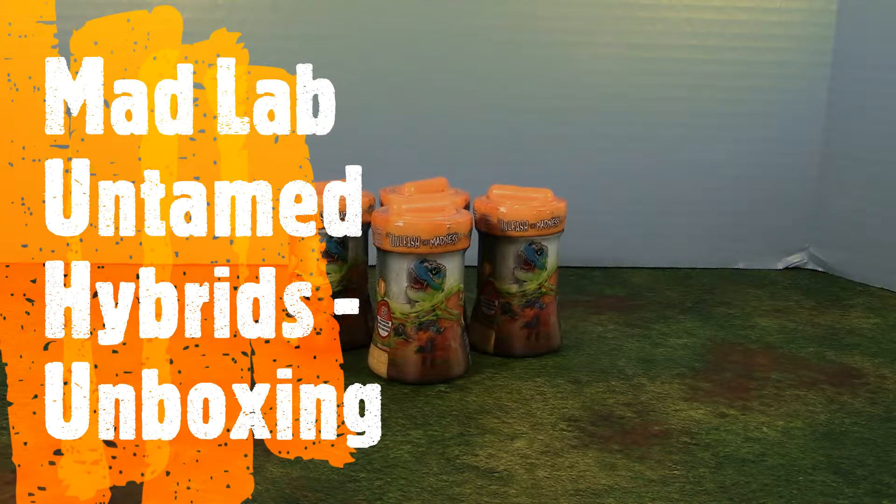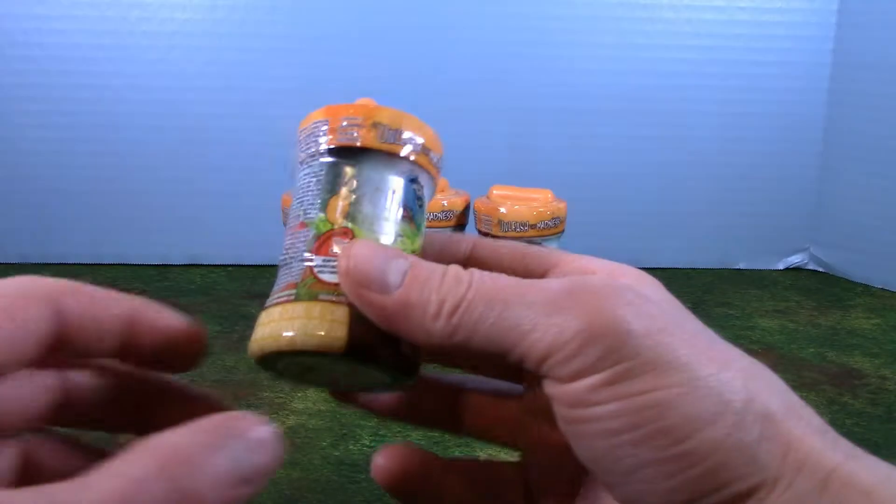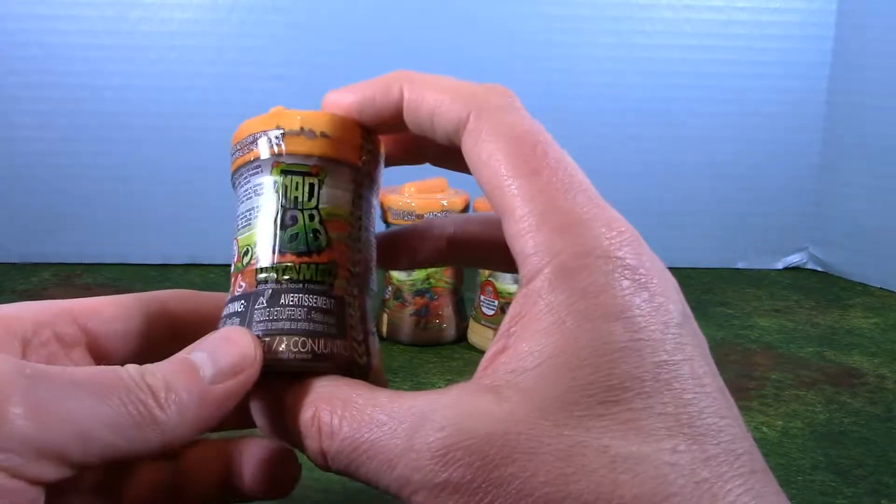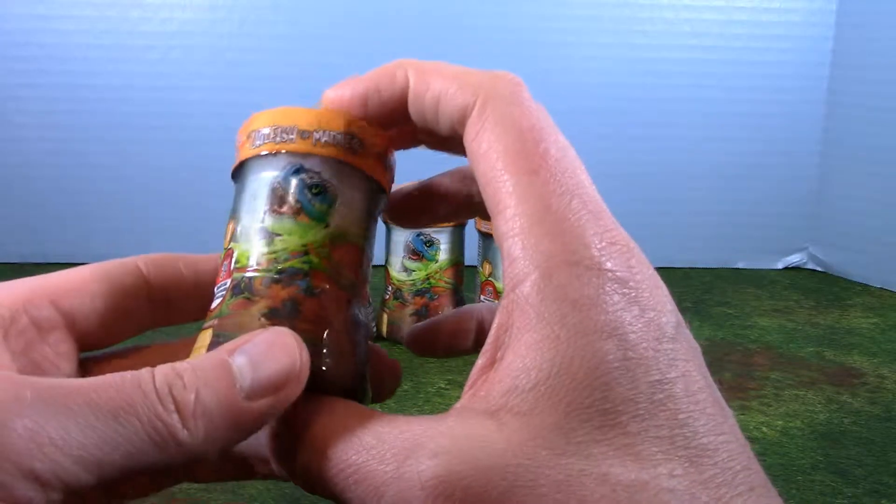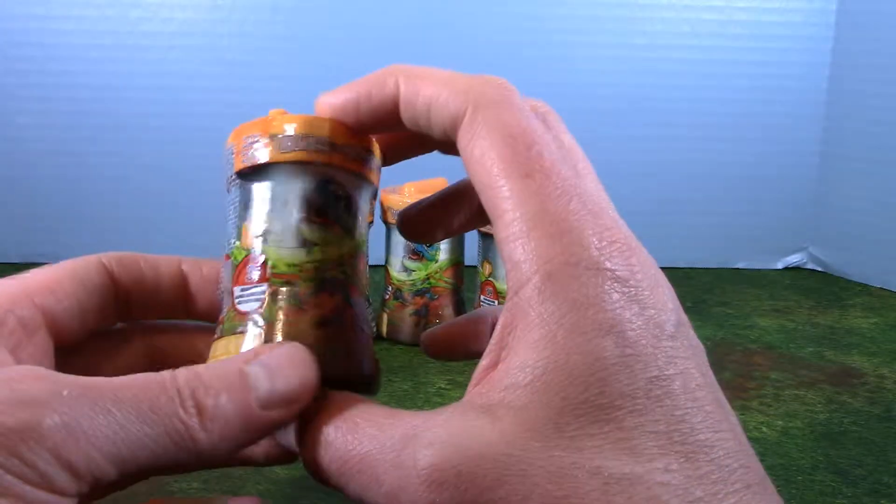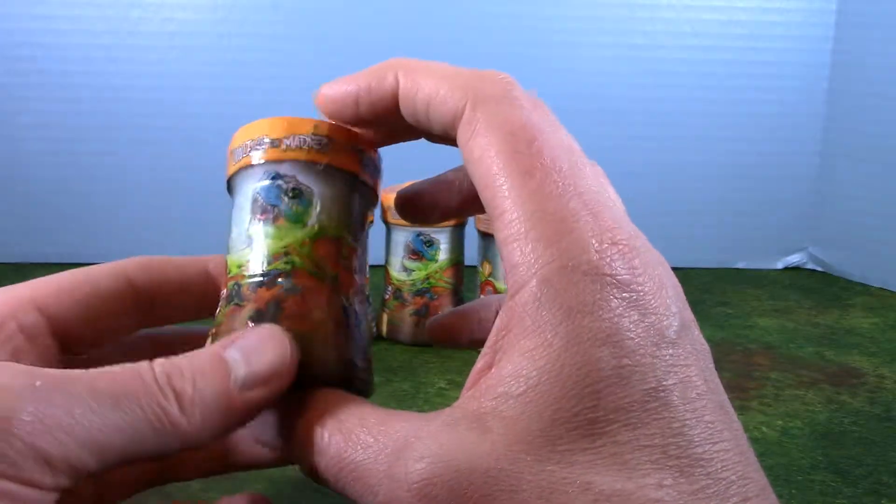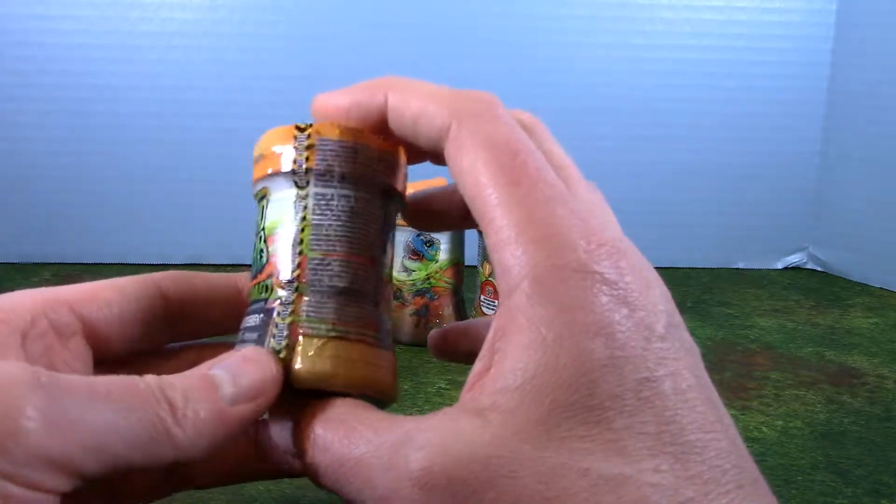Today we are opening up some of our Mad Lab Untamed figures. These are cool little figures that look like there's some sort of little monster in a little vial or jar. See here's what looks like a velociraptor or a little dinosaur.